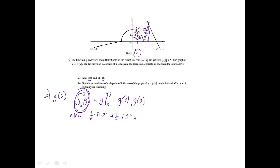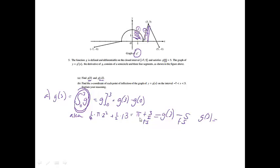Simplifying that, we get pi plus 3 halves. That equals g of 3 minus g of 0. They told me that g of 0 was equal to 5, so if I get g of 3 by itself, I'll add 5 to both sides. My final answer is g of 3 equals pi plus — 5 is 10 halves, plus 3 halves is 13 halves. So g of 3 equals pi plus 13 halves.